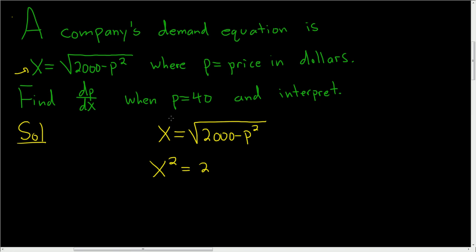So if we square the left hand side, we just get x squared. And if we square the right hand side, the square root goes away.